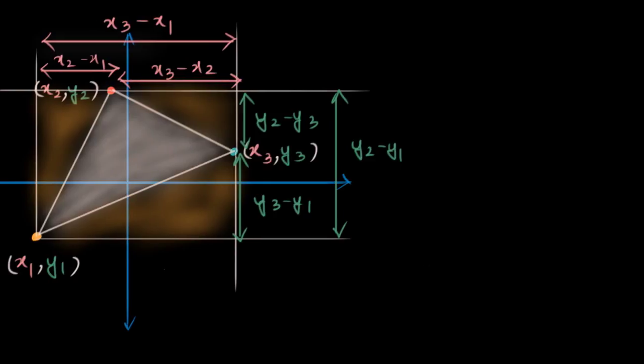So what is our next step from here? Our next step from here is to write the area of the rectangle down first. What's the area of the rectangle? It's length into breadth or x3 minus x1 multiplied by y2 minus y1. This is the area of the rectangle.